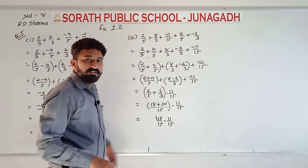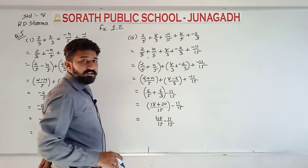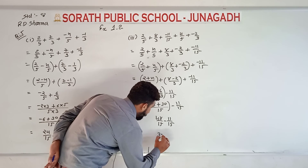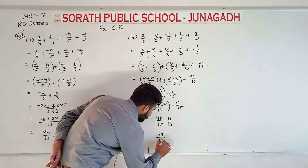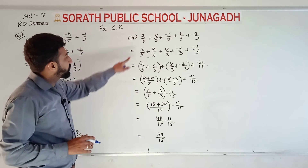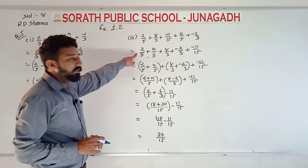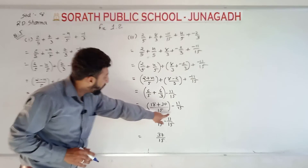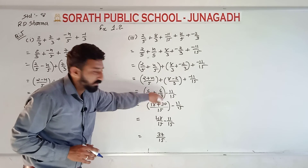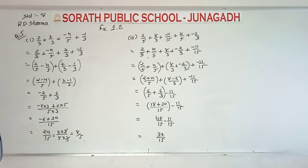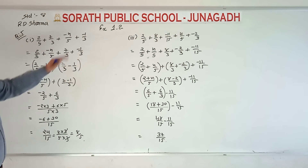So 37 upon 15 is our answer. We applied commutative property first, then associative property, and again associative property. Write down both questions, and the other two questions will be your homework.